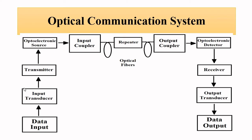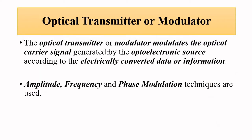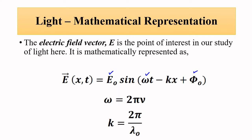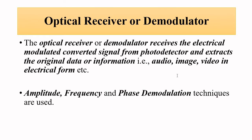The two key components in an optical communication system that deal with modulation are the optical transmitter or modulator on the sending side, and the receiver or demodulator. The modulator modulates the light signal — the carrier signal generated by the source, which can be a light emitting diode or laser — altering its amplitude, frequency, or phase as required. The demodulator then extracts the original data or message signal.